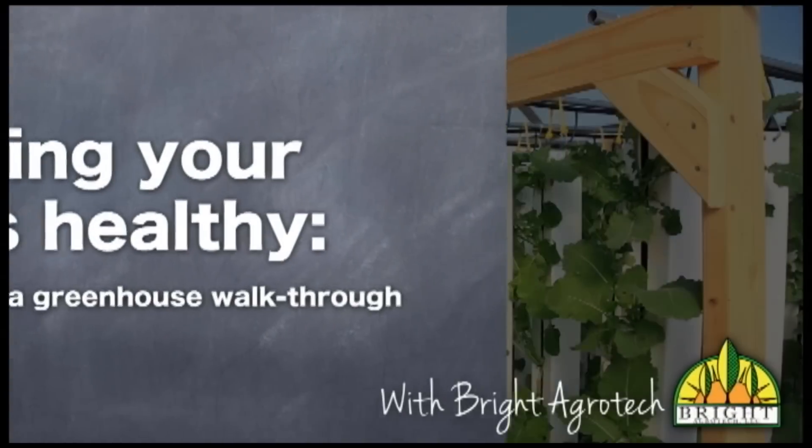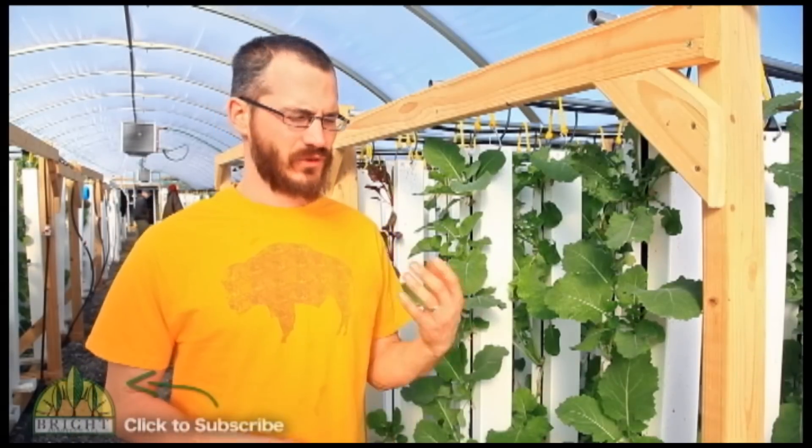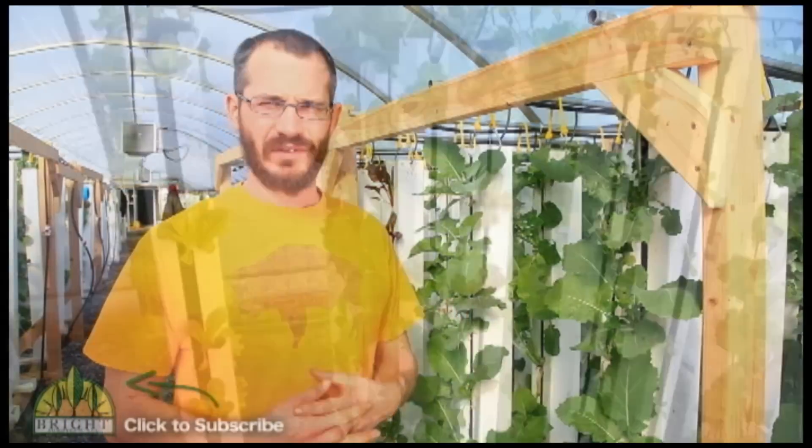On today's video we're going to talk about what to look through on a system walkthrough. So this is a question we've gotten a few times. When you walk through your greenhouse, what are you looking for? Are you looking for nutrient deficiencies, wilting plants? What is it that you're keeping your eyes open for on a daily basis?